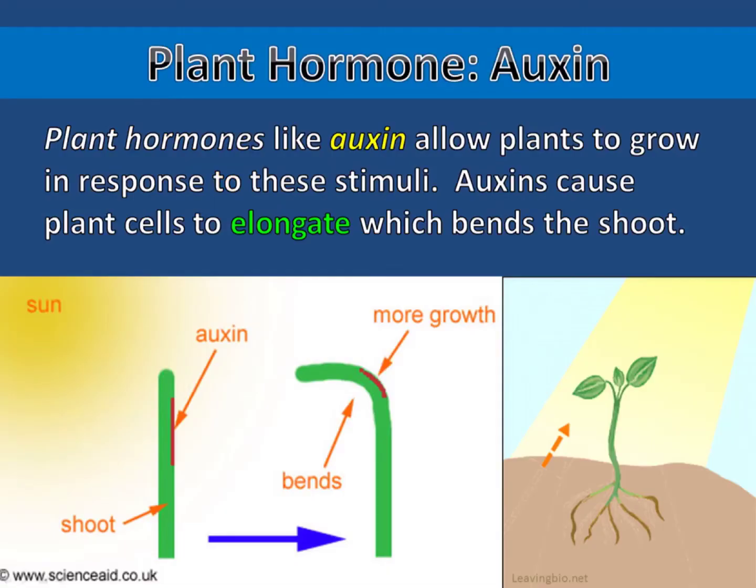Plant hormones, like auxin, allow plants to grow in response to these stimuli. Auxins cause plant cells to elongate, which bends the shoots.